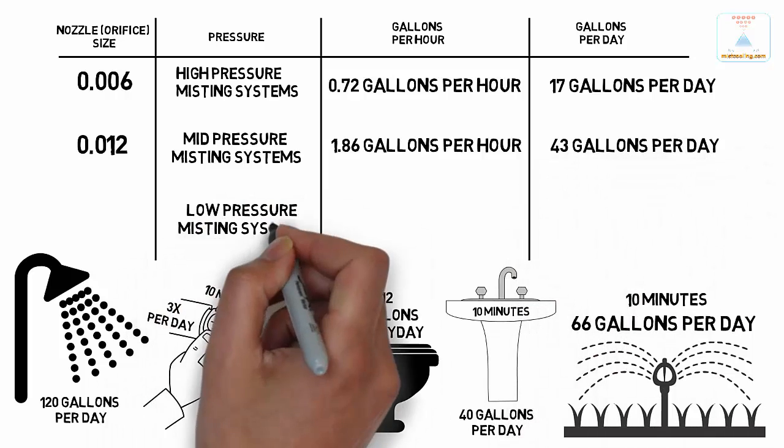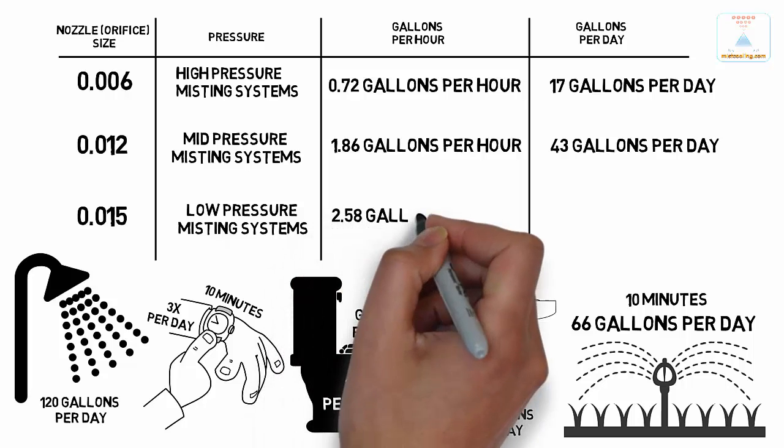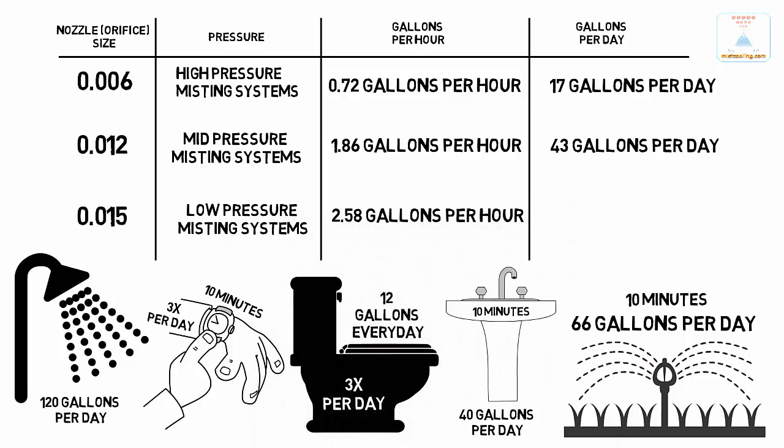While low pressure misting systems consume approximately 2.58 gallons per hour and approximately 61 gallons per day.